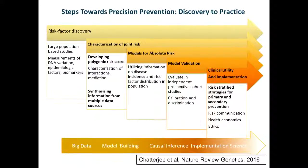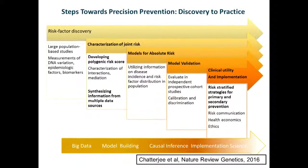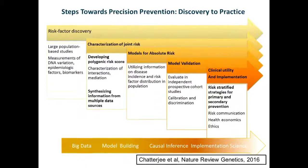I have highlighted three areas I'm going to focus on in today's talk: one is how to develop a polygenic risk score using data from genome-wide association studies; synthesizing information from multiple data sources on the methodological side; and towards the end, a particular application using a breast cancer model we have developed and how it could be potentially useful for certain clinical applications.